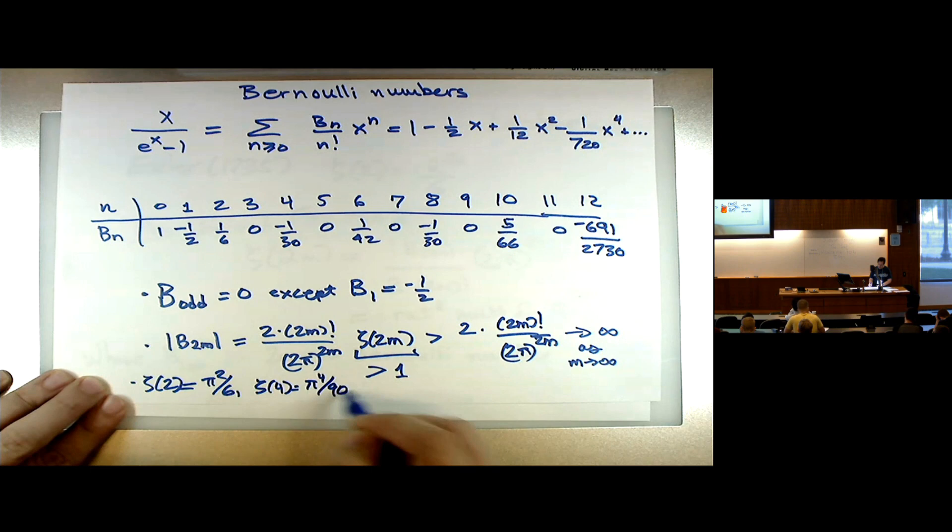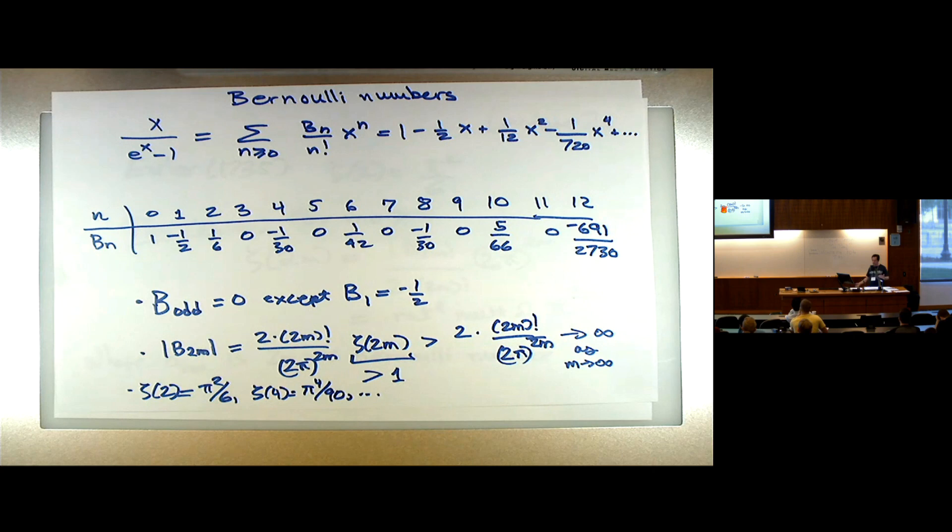They're not all going to be pi to a power divided by something simple, because zeta(12) will have a 691 in the numerator.